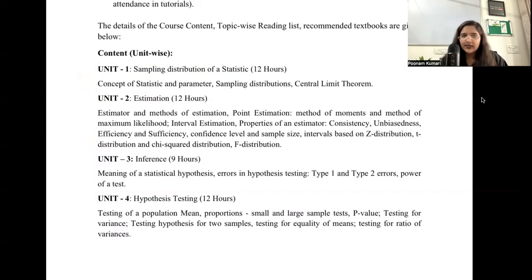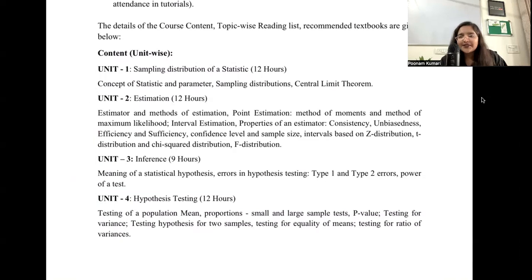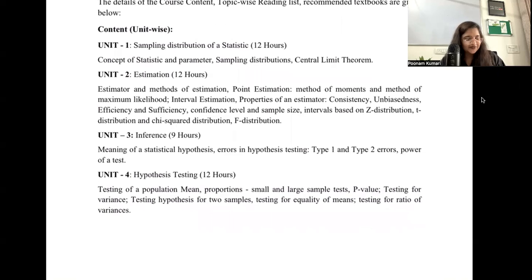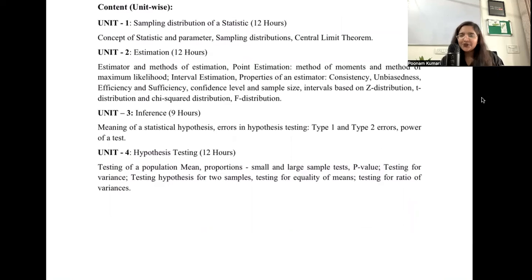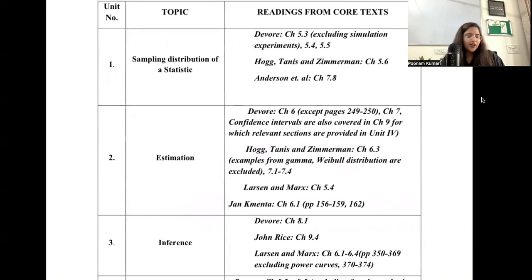All four units are sequential — you cannot do one unit out of order and then come back to the rest. Each unit depends on the previous one. So units one, two, three, and four must all be done sequentially. A strong suggestion: revise your old concepts — random sample, expectation, variance, random variable, PDF, CDF — these basic things must be known.